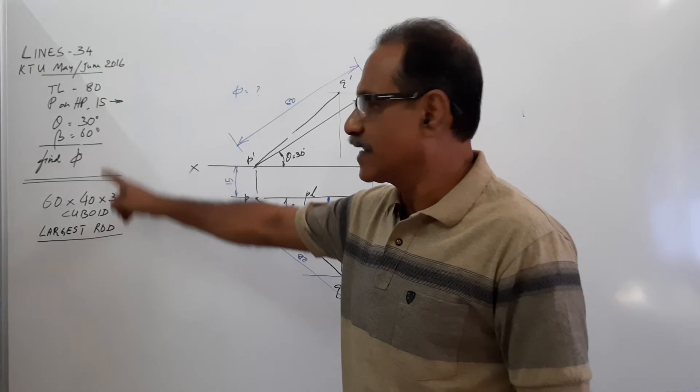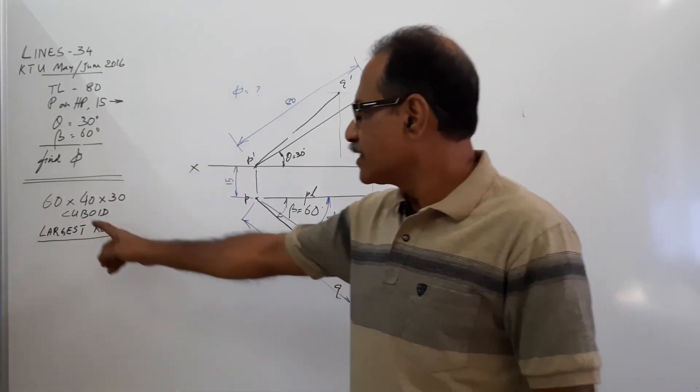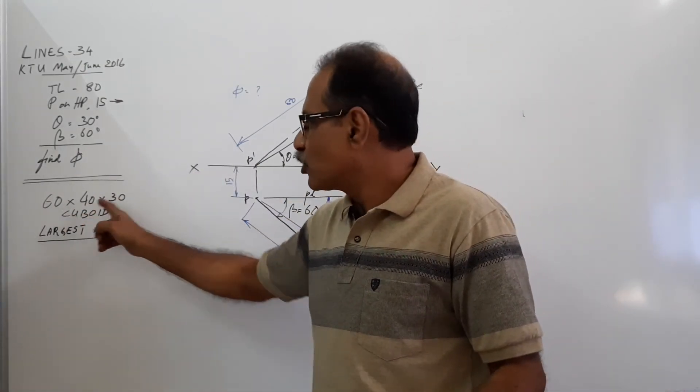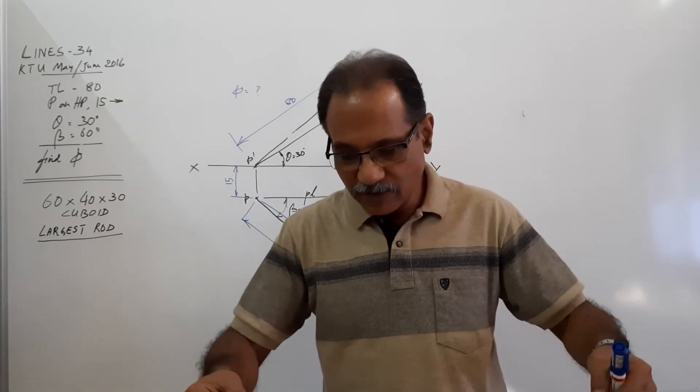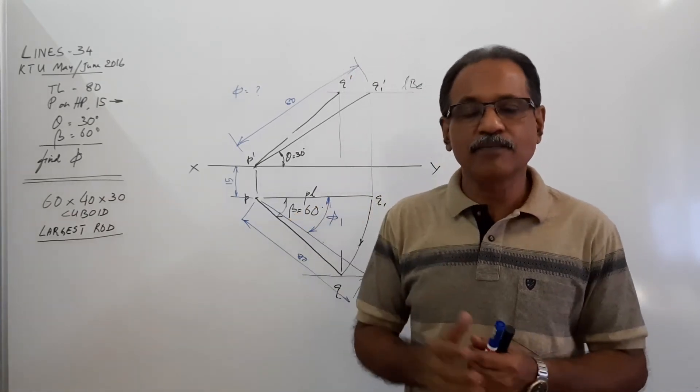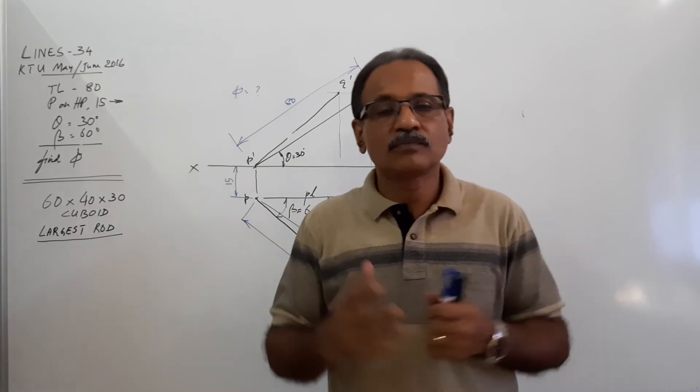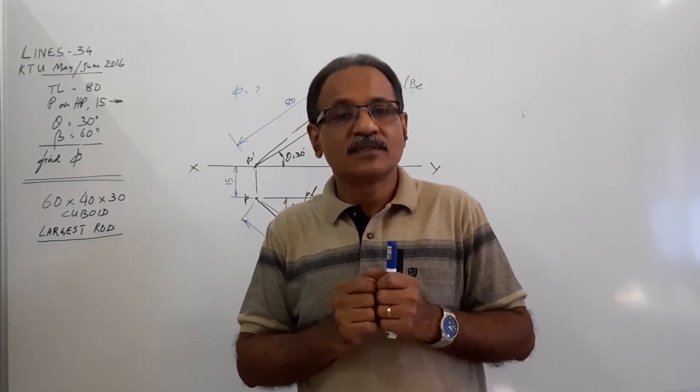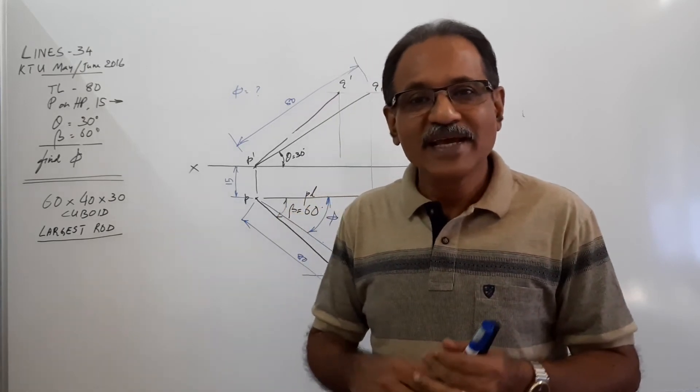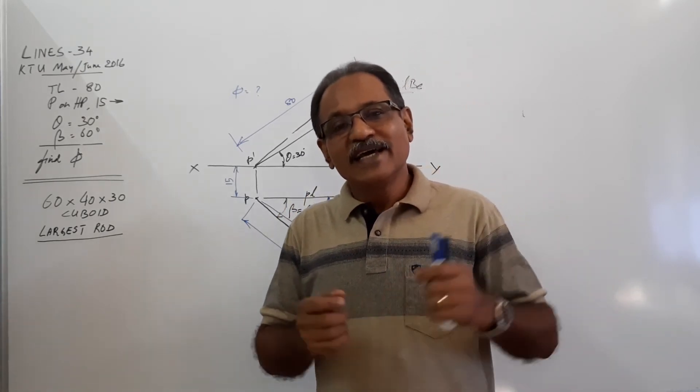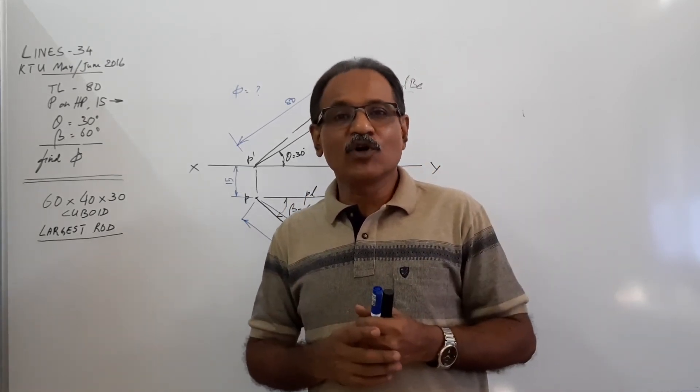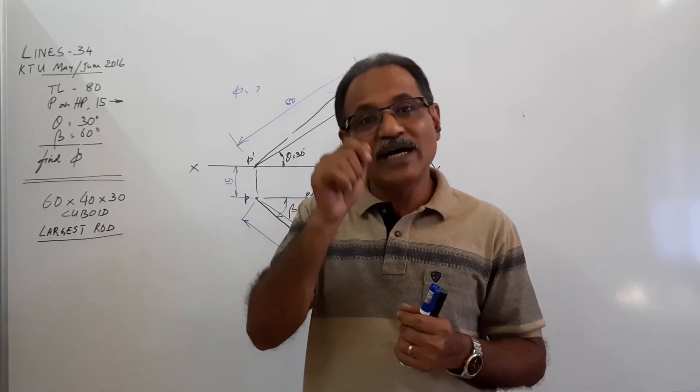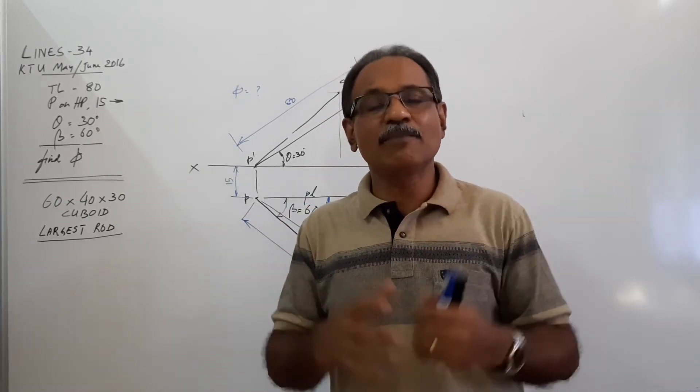The next question, the same question paper. There is a cuboid, 60 by 40 by 30 mm. 60 in one direction, 40 in the other direction and a height of 30. A cuboid. Inside this cuboid, you are asked to find out the longest rod that can be kept inside the cuboid.